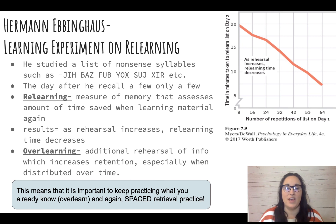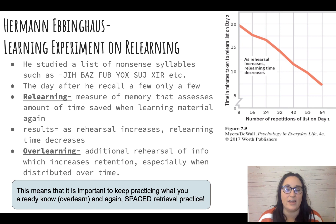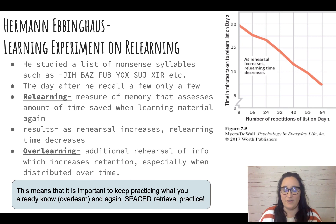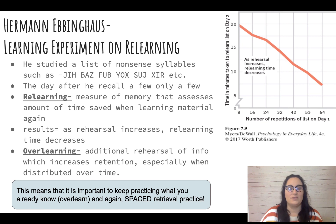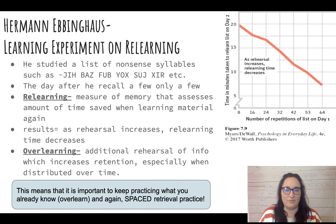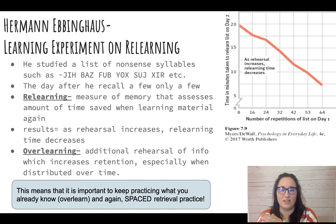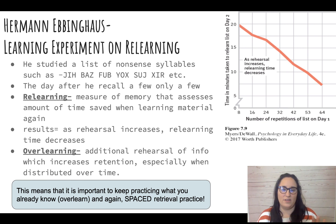Herman Ebbinghaus did a learning experiment on relearning and found that as our rehearsal of information increases, our relearning time decreases. There is a negative correlation between time taken to relearn information and the number of repetitions on the list.